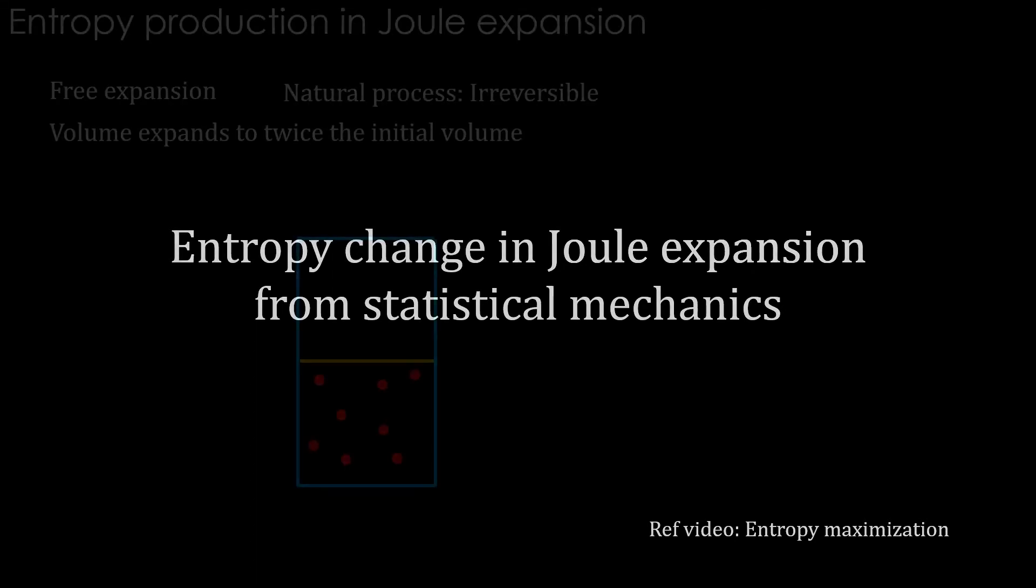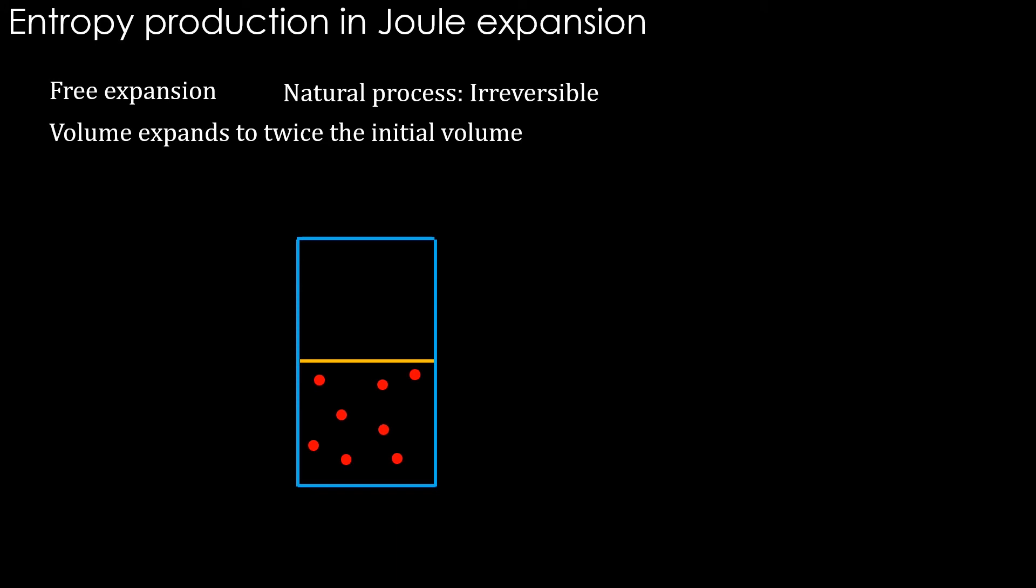In classical mechanics we have seen that the entire entropy change in joule expansion is the entropy produced and it was equal to R natural log of 2. Now let us use what we have derived as the statistical interpretation of entropy.